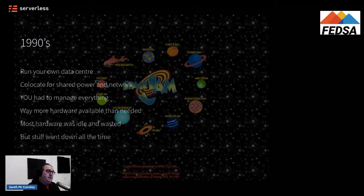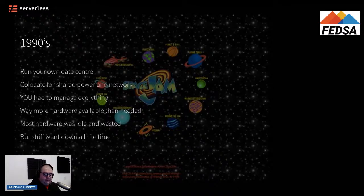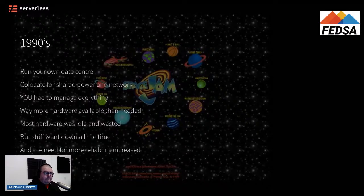Back then, stuff went down all the time. This was a new field, a new world. We were still learning how to build redundancies in place, but things would still go down all the time. If you wanted to do this on the cheap, you'd suffer some downtime — and that's just the way it was back then. But over time, as the Internet became more and more important to companies' bottom lines, a need for reliability increased.